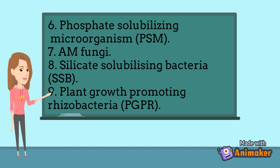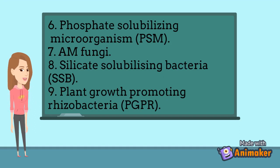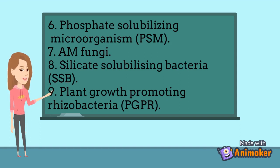Silicate-solubilizing bacteria are capable of degrading silicates and aluminium. They produce several organic acids that help in silicate weathering, e.g., Bacillus sp. Then plant growth promoting rhizobacteria, PGPR.